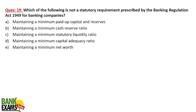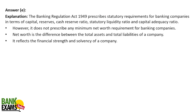Which of the following is NOT a statutory requirement prescribed by the Banking Regulation Act 1949 for a banking company? Maintaining paid-up capital and reserves, CRR (Cash Reserve Ratio), SLR (Statutory Liquidity Ratio), and capital adequacy ratio are all statutory requirements. However, net worth is not really a prescribed statutory requirement under the Banking Regulation Act — there is no specific net worth requirement for banks.